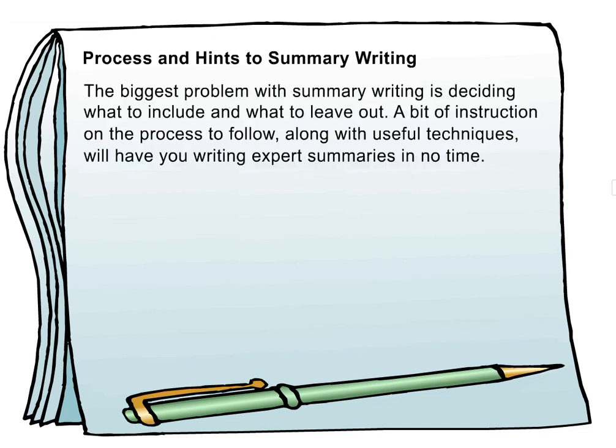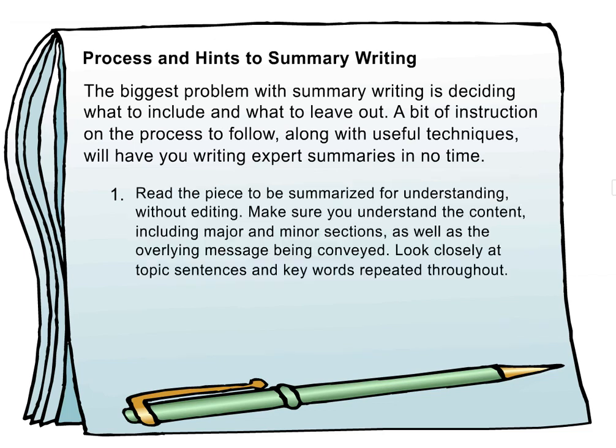The biggest problem with summary writing is deciding what to include and what to leave out. A bit of instruction on the process to follow, along with useful techniques, will have you writing expert summaries in no time. Step 1: Read the piece to be summarized for understanding, without editing. Make sure you understand the content, including major and minor sections, as well as the overlying message being conveyed. Look closely at topic sentences and keywords repeated throughout.